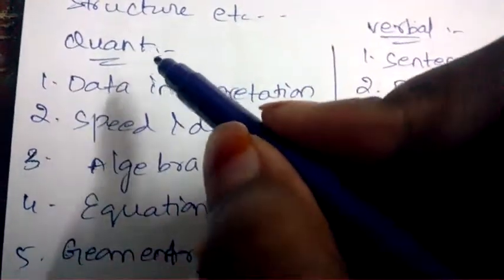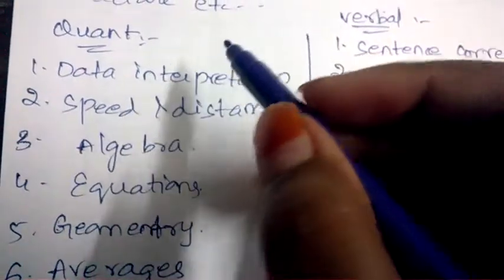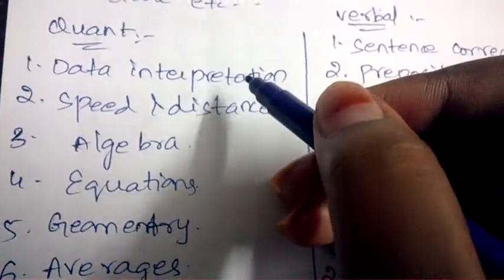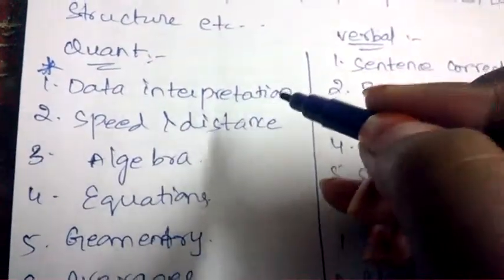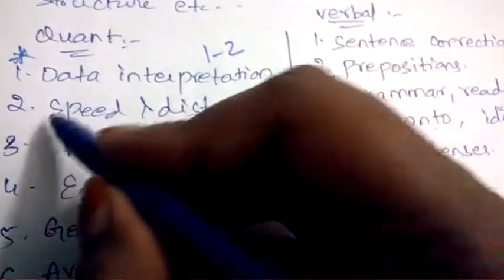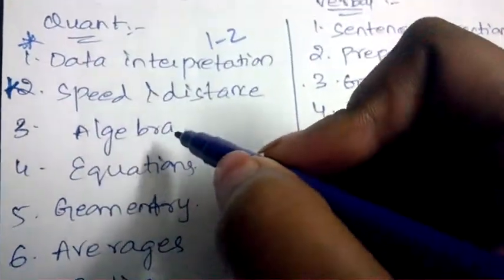Coming to the portion of quantitative aptitude, data interpretation is the most important topic, out of which one to two questions will be asked. Speed and distance is also very important. Questions will also be asked on algebra, equations, geometry, averages, ratio, and progressions.